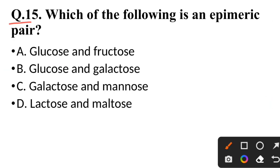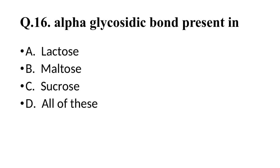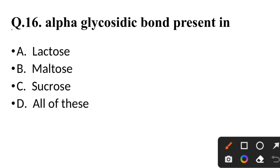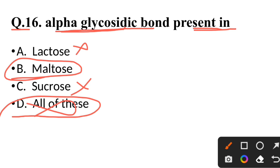Question 15: Which of the following is an epimeric pair? Correct answer is glucose and galactose — they are the epimeric pair. Question 16: Alpha-glycosidic bond is present in — correct answer is only maltose.